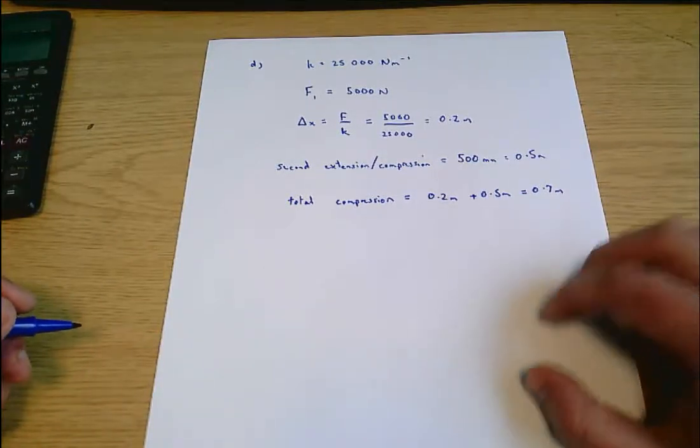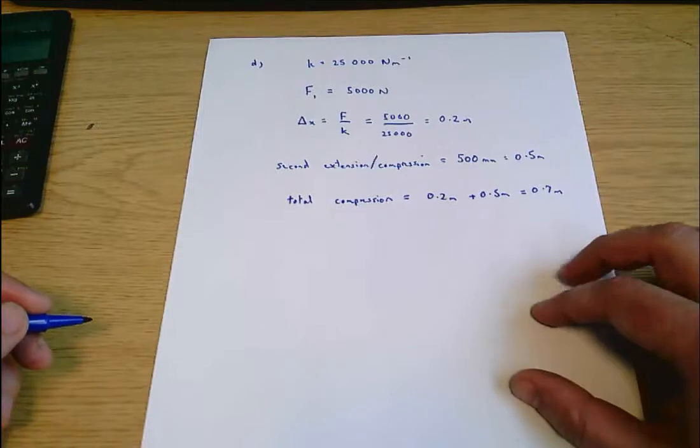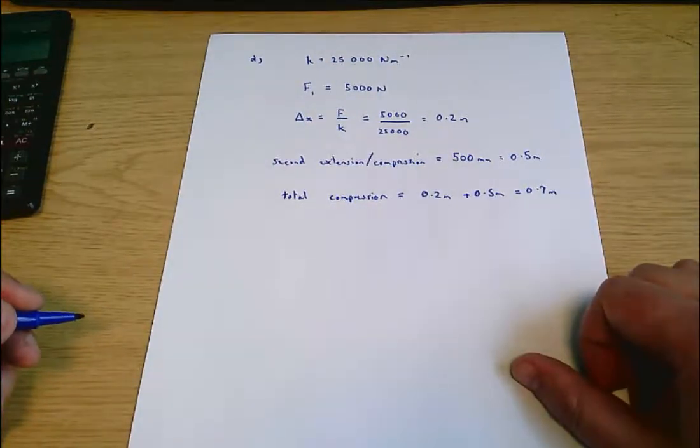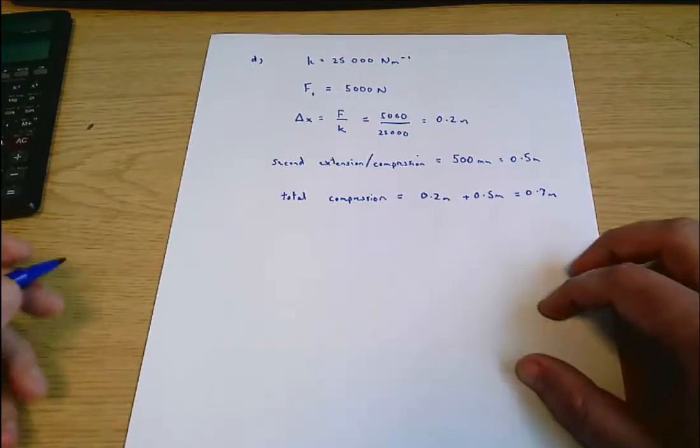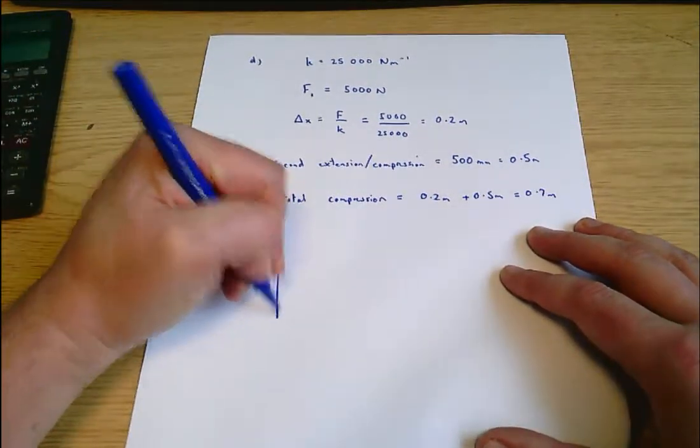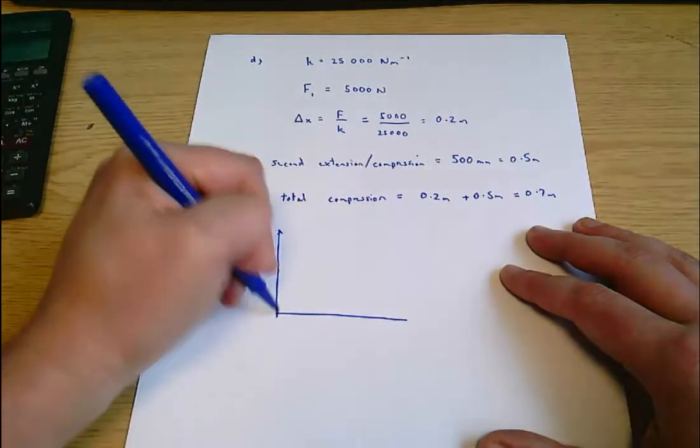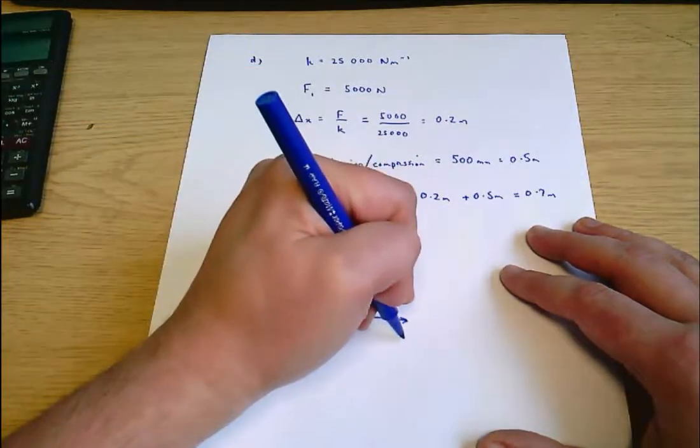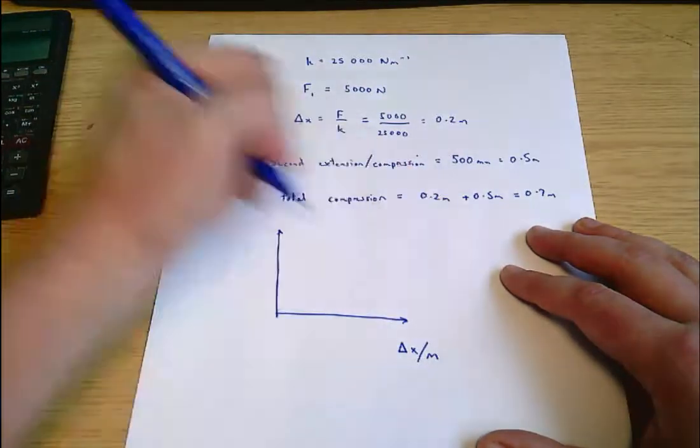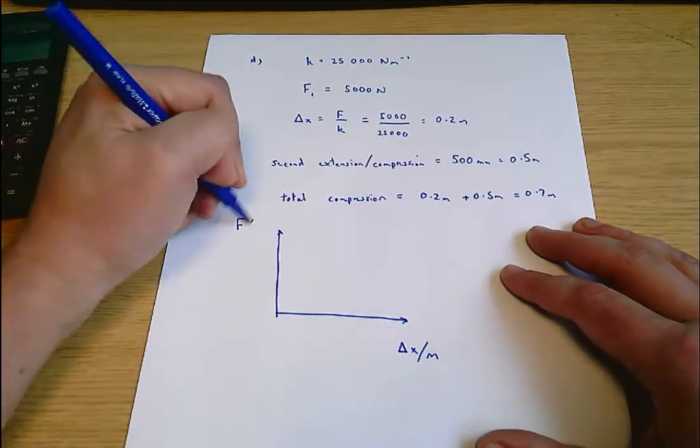Calculate the total work done on the spring. Well you might just remember that the work done on a spring is a half K delta X squared. But it's more useful perhaps to remember that work done is the area under a force displacement graph. So if this is delta X in meters and this is force in newtons.